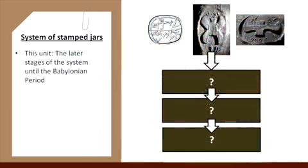In this unit, we will overview the later stages of this system up until the Babylonian period. Our starting point is the days following Sennacherib's campaign to Judah in 701 BCE.